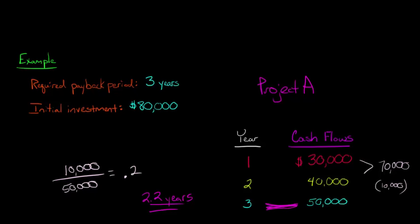we're basically saying let's take about one-fifth of the year. So you could even say two and one-fifth years, which is equivalent to saying 2.2. So if somebody were to ask you how quickly does Project A pay itself back, we would say 2.2 years.